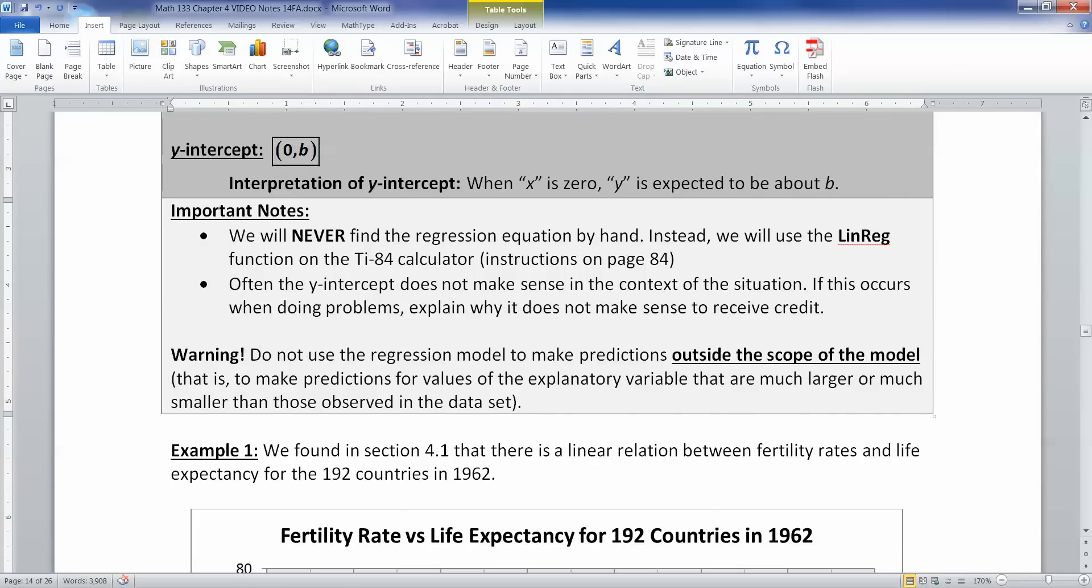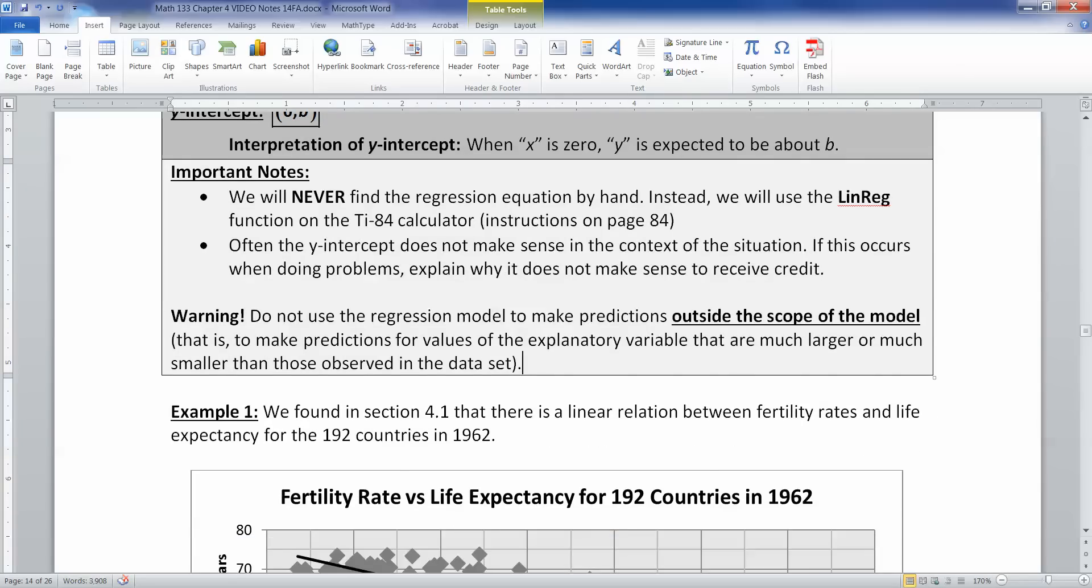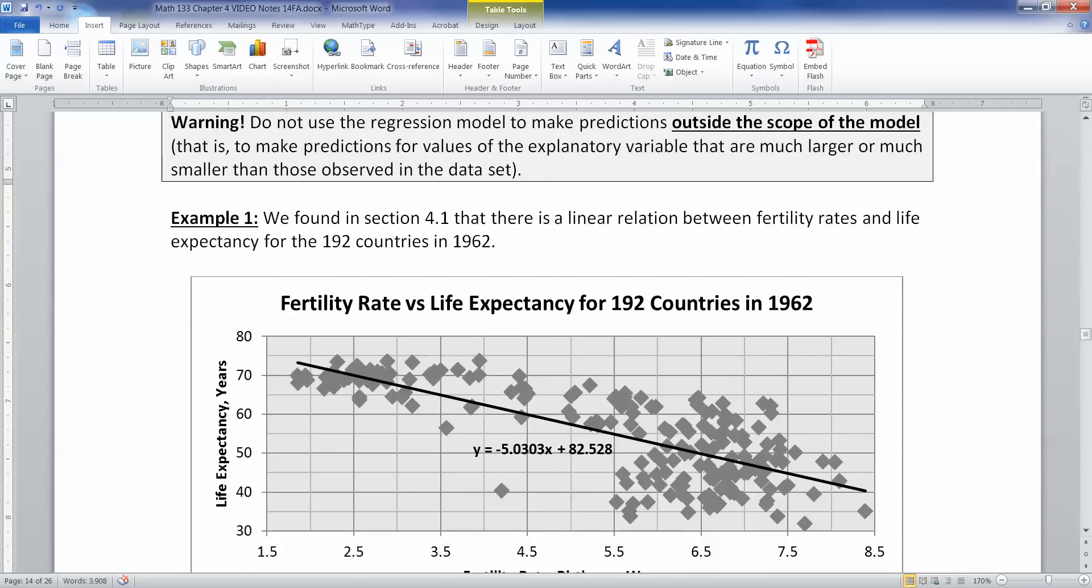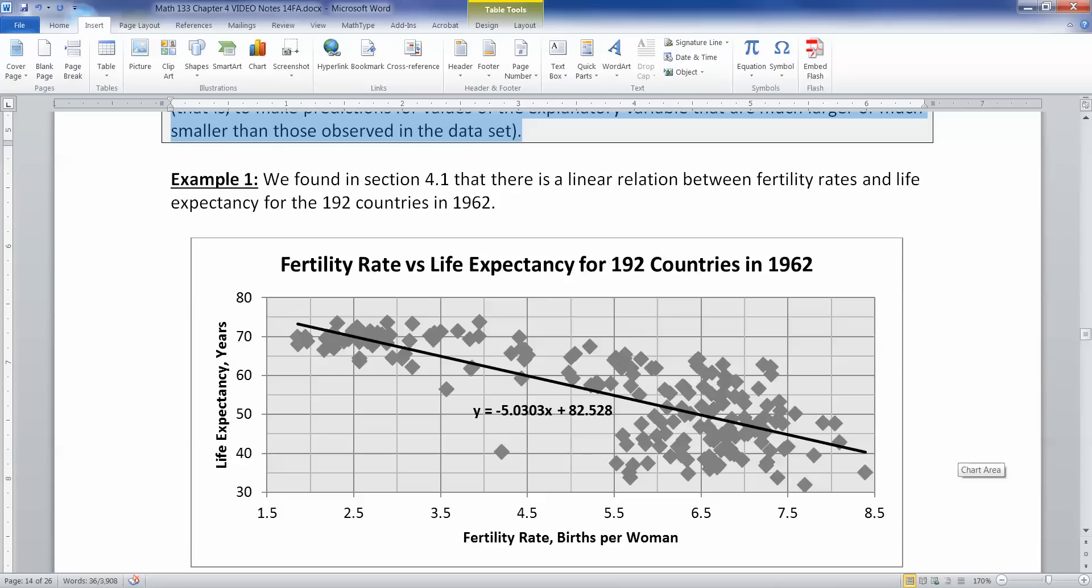Another important note is that we don't want to use the regression model to make predictions that are outside the scope of the model. That is, to make predictions for values of the explanatory variable that are much larger or much smaller than those observed in our data set. So if you look back here, this was the life expectancy data. You don't want to talk about what would happen with a country with 9.5 births per woman because you don't have data that's anywhere remotely close to that. Similarly, you don't want to talk about one birth per woman because you don't really have anything super close to that. You want to stick closer to the range of data that you actually have. That's what this warning is saying. Because, of course, if you go too far out, you're talking about 12 or something. One, that's silly. No country has 12 births per woman. But two, it could start giving you crazy values for your y variable, which don't make any sense.